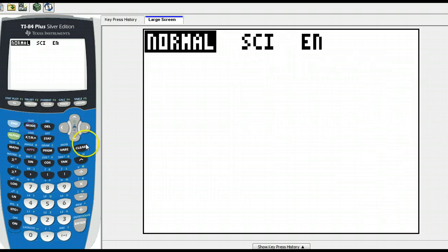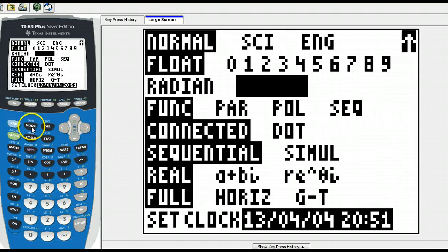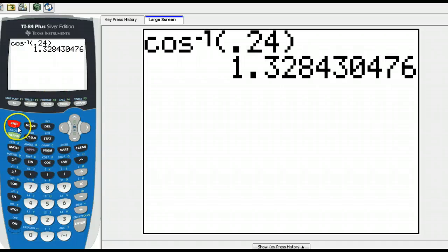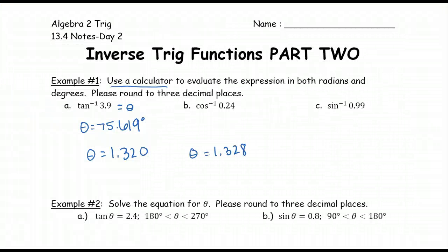Then to go back to degrees you can go to mode, make sure you're in degree mode. And then again you can retype it in or hit second entry. It pulls it right back up, press enter. 76.113 degrees. All you have to do is make sure you find both.